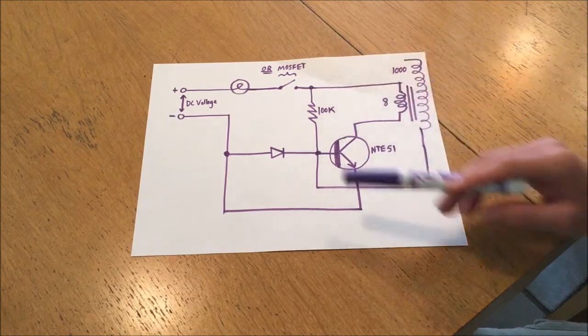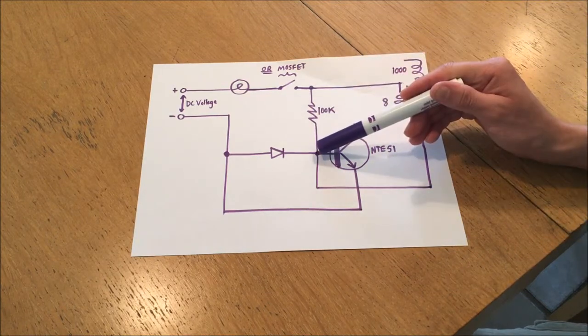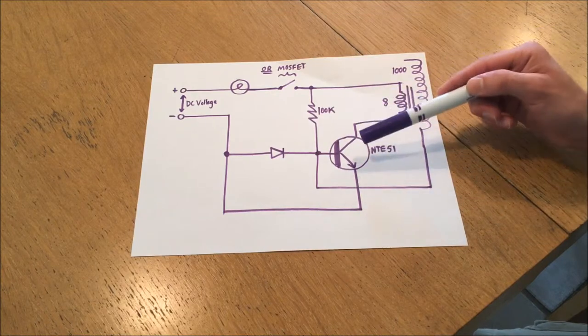By switching the transistor off, the field here collapses and kickstarts it again in the next cycle, which will allow current to start flowing again, and the transistor will turn back on again.